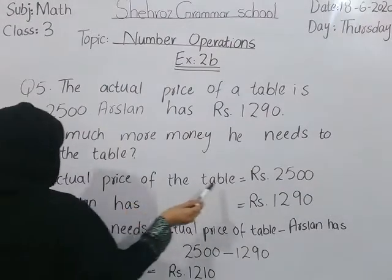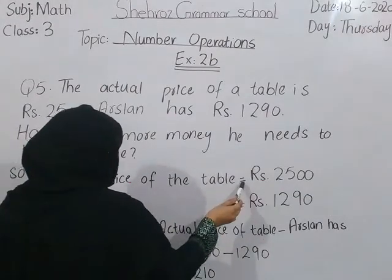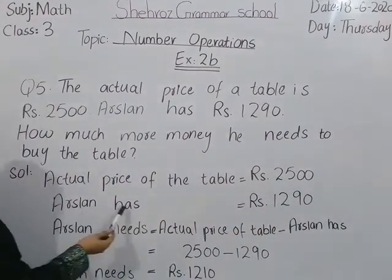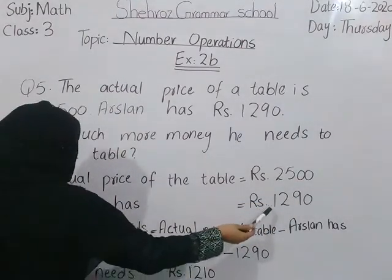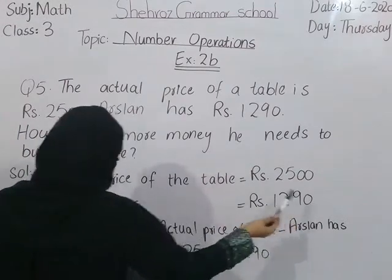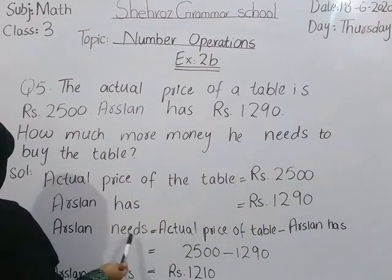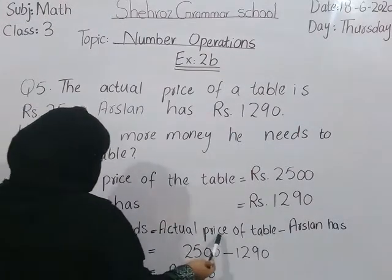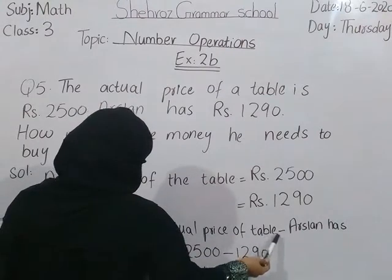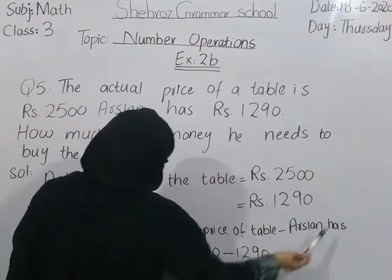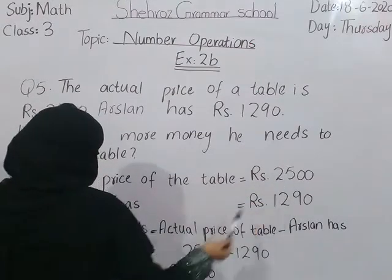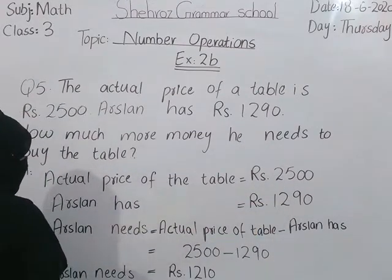Actual price of the table is equal to Rs. 2500. Arslan has Rs. 1290. Arslan needs — Arslan को कितने पैसे चाहिए — is equal to actual price of table, subtraction sign, Arslan has. तो बच्चों हम टेबल की actual price में से Arslan के पास जो पैसे हैं उसे subtract कर देंगे, minus कर देंगे।